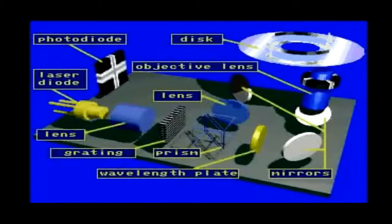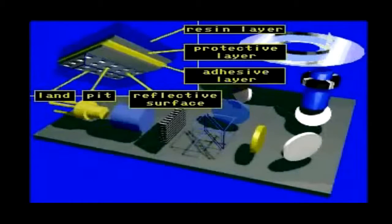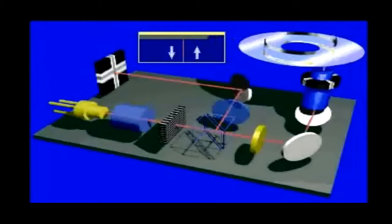To play back the information on a CD or CD-ROM disk, a very narrow laser beam is used to strike the microscopic pits or depressions and the flat areas called lands on the disk.